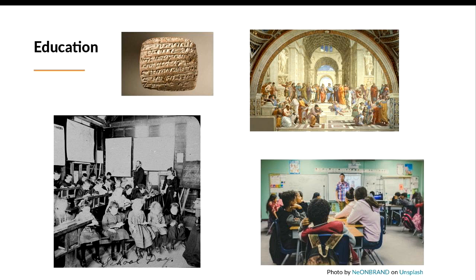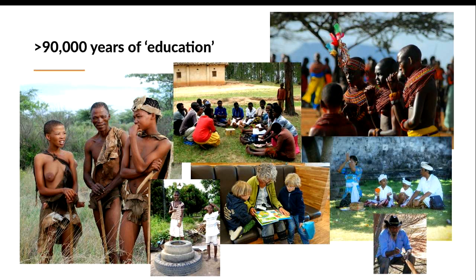What did education look like over that period? The Sumerians, about 6,000 years ago with their cuneiform, had schooling — they actually set homework, and you have kids who got into trouble for not handing it in with their clay tablets. The School of Athens — the Greeks and Romans held education in high regard. Then we have those Victorian schoolrooms and the modern schoolroom. But that accounts for only about 10,000 years — we have about 90,000 years where that wasn't education.